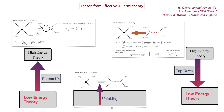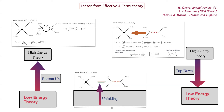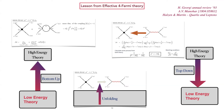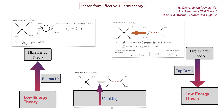Student question: Apart from the quadratic divergence in higher-order corrections, what is the other important point regarding this diagram? Answer: The cross section increases with energy indefinitely, which is a unitarity violation even at tree level. The higher-order correction shows the failure of the effective theory because it is proportional to the cut-off — you cannot treat it as a perturbation.